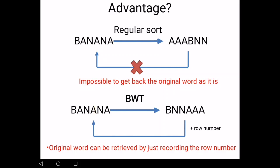Now, BWT is different. The beauty of it is that you can reverse the order. You can get back the original words by just remembering the row number. So, you can achieve both. You can group the same letters together and at the same time retrieve the original word. Now, I'm going to show you how to do that.